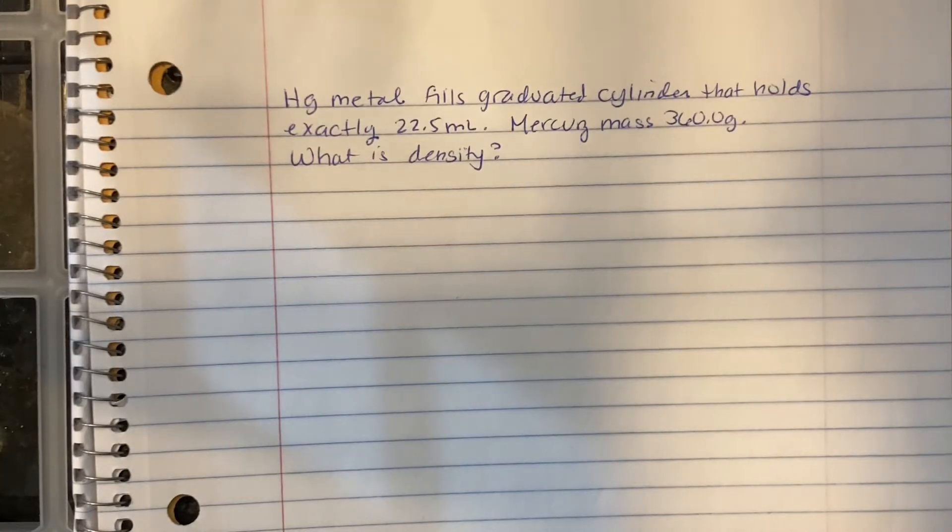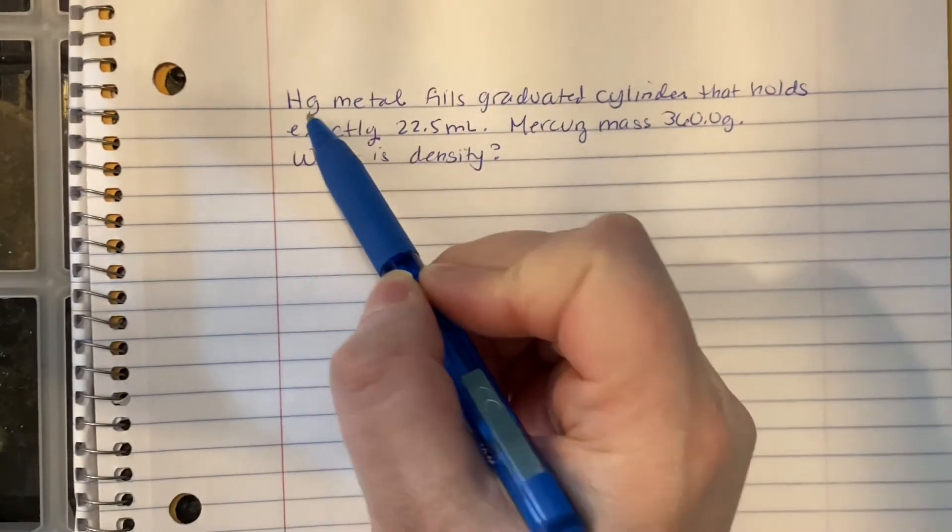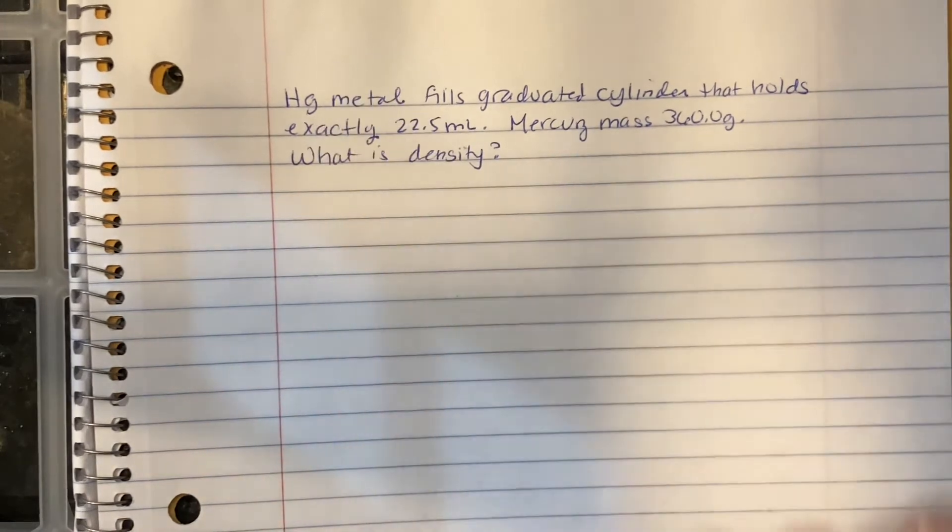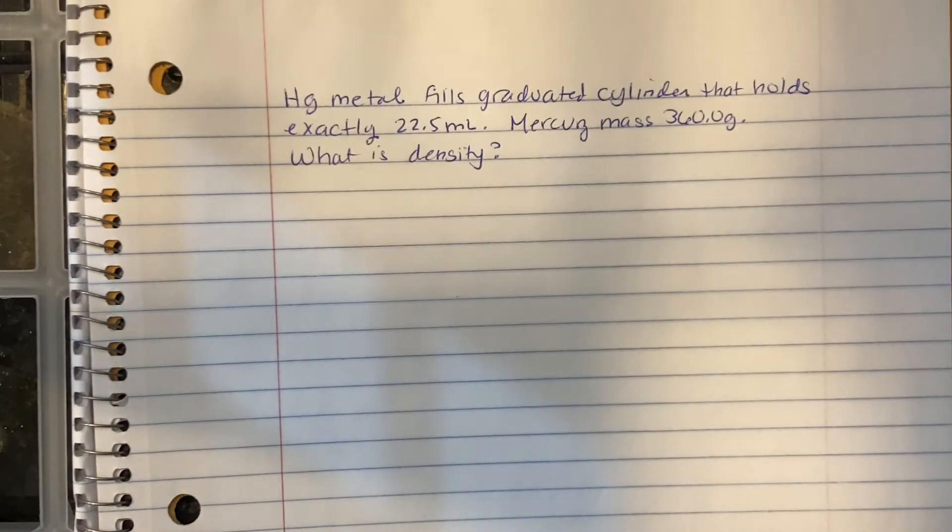All right, so this density problem is mercury metal. Hg is just a symbol for mercury, just like how we use millimeters of mercury. It fills a graduated cylinder that holds exactly 22.5 milliliters. The mass is 360.0 grams, and what is the density?